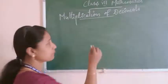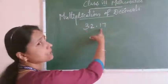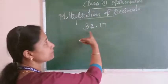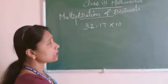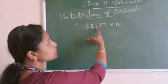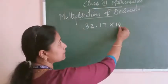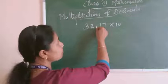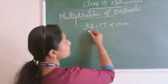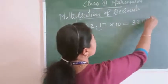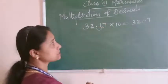Listen to this example. Take the decimal number 32.17. If you have to multiply this decimal by 10, easily, without any steps, you can write the answer directly. You just shift the decimal point to the right by one place. Since we are multiplying by 10, the point shifts one place to the right. So your answer is 321.7 — the point is placed after one digit to the right.